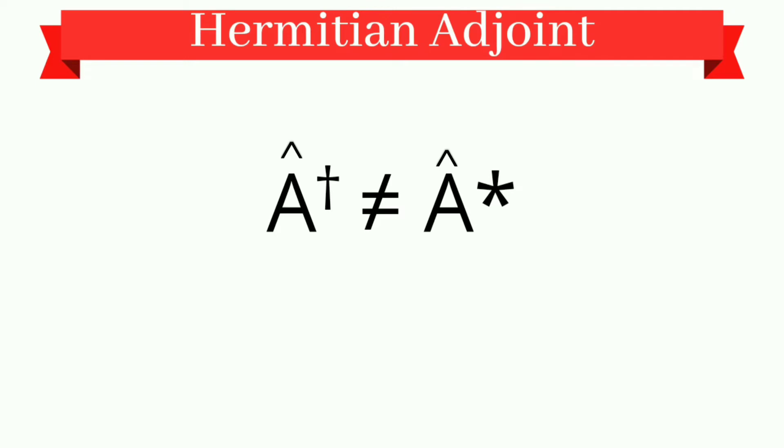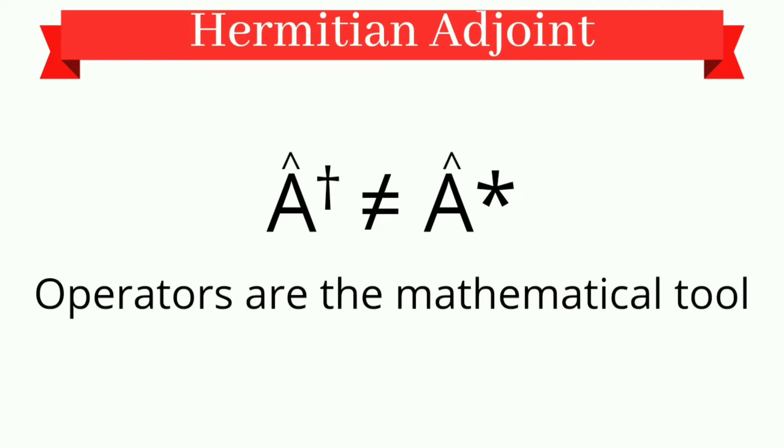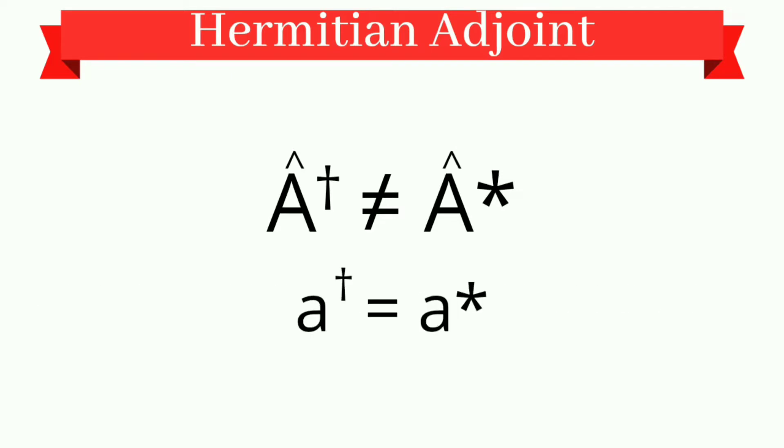Now, talking about operators, we can't say that A operator dagger equals A star. It is not so. This is not a physical quantity. Operators is a mathematical tool. Though these two quantities look the same, they are not. A dagger equals A star in case of complex numbers, but A operator dagger is not equal to A operator star.